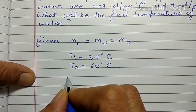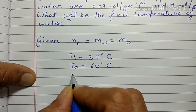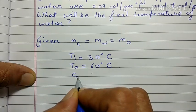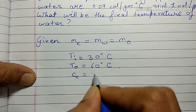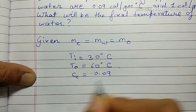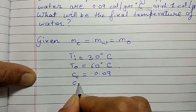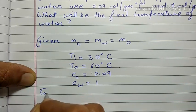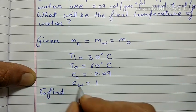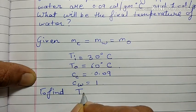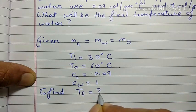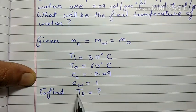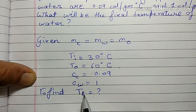The specific heat is denoted by small letter c. The specific heat of copper cc = 0.09, and the specific heat of water cw = 1. The final temperature tf is what we need to find — that's our unknown.